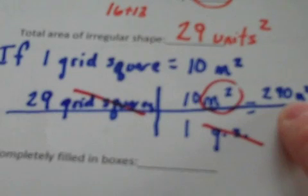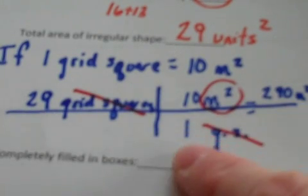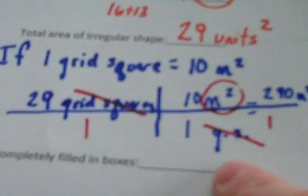Now remember, the only thing you have left to do is multiply straight across. 29 multiplied by 10 is 290, and then I'm going to put on my label of meters squared. 1 times the invisible 1 under here is also 1, and 290 meters squared is the area that this particular picture would represent if this were representing a lake on a map.